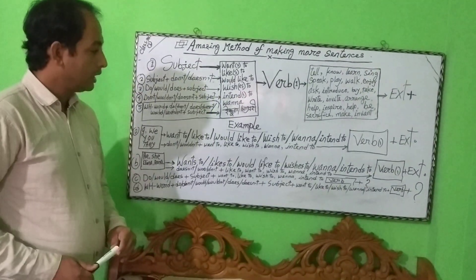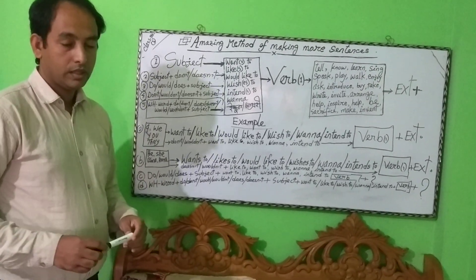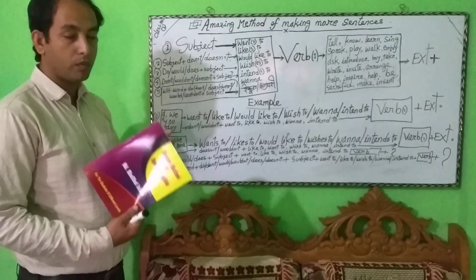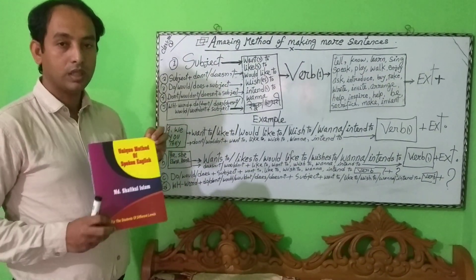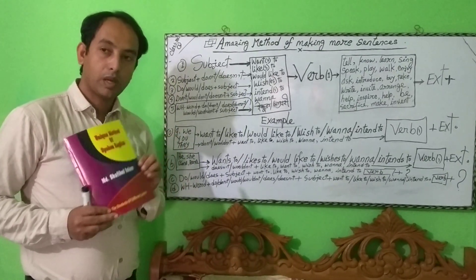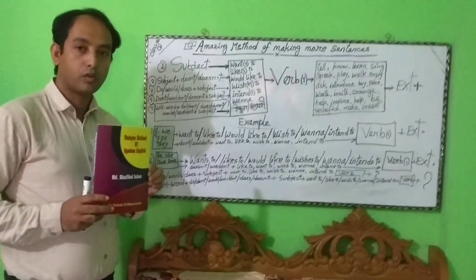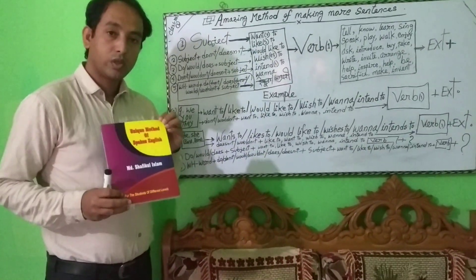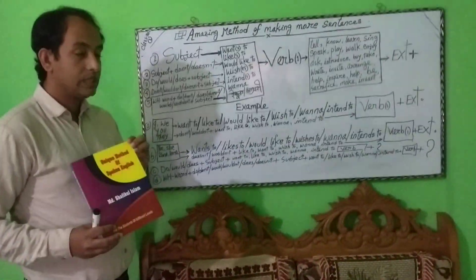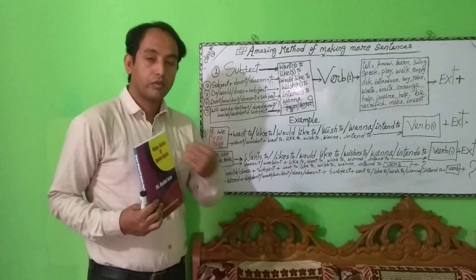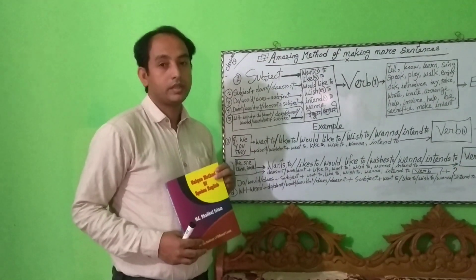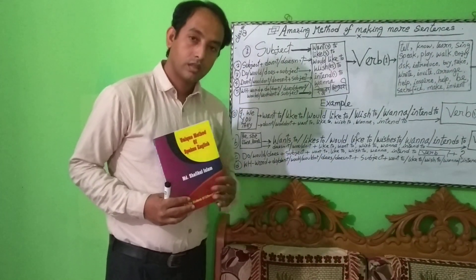Hello my dear viewers, I think you have understood this topic — it has been clear to you. I have chosen this rule for making more sentences from my books. There are so many rules in my books. I have written a book — the name of my book is 'Unique Methodist Book in English.' It has been published. You will be able to collect this book from any library. It will be very helpful for you to improve your English skill, to be confident, competent, and skillful in English. I am sure you will be able to increase your confidence in English if you follow these rules. Thank you my dear viewers. Allah Hafiz.